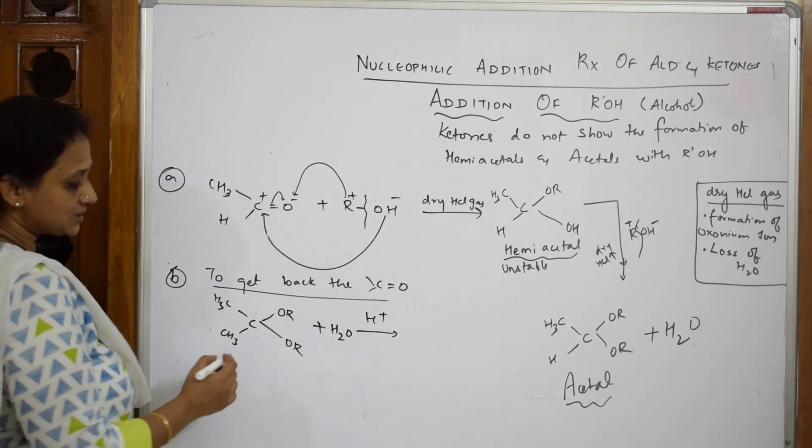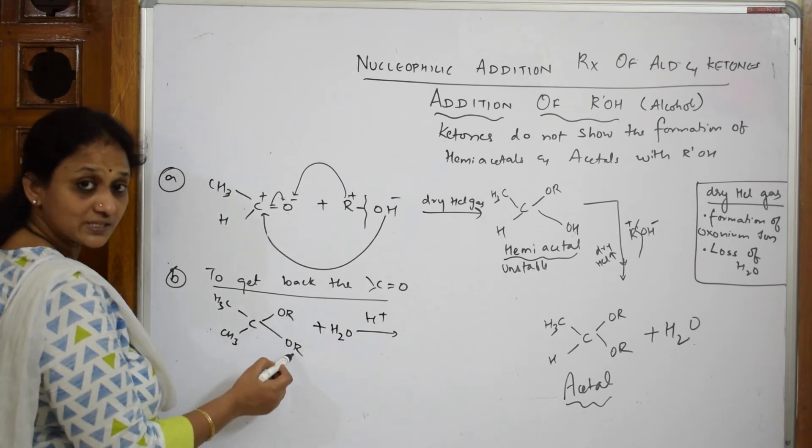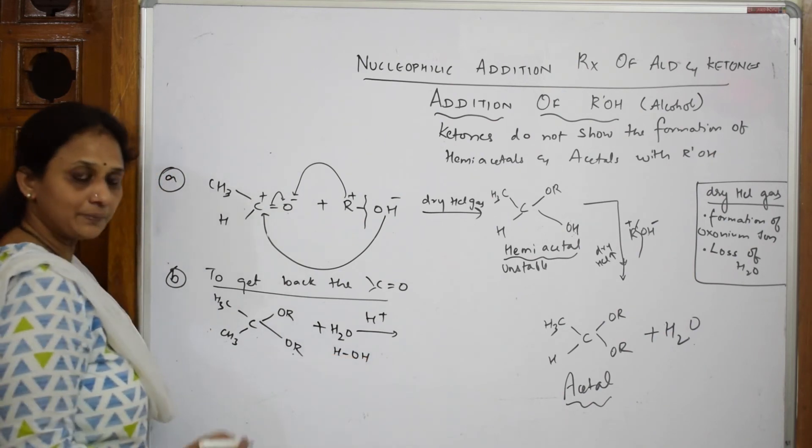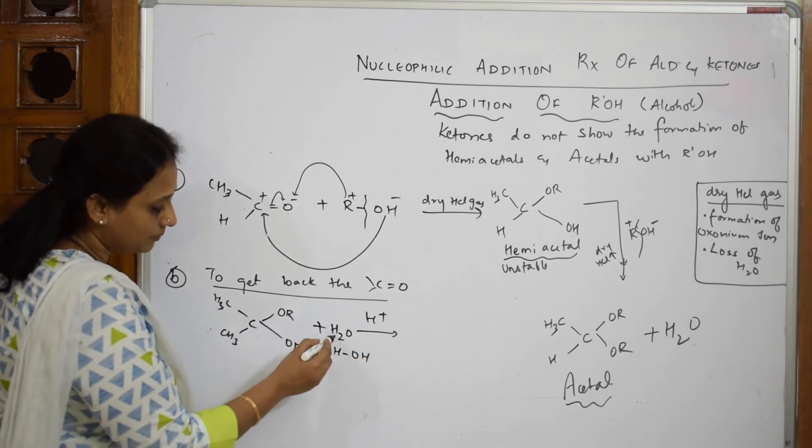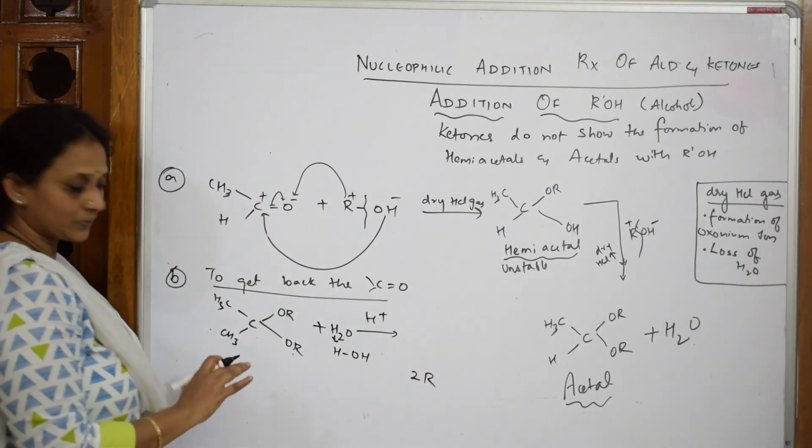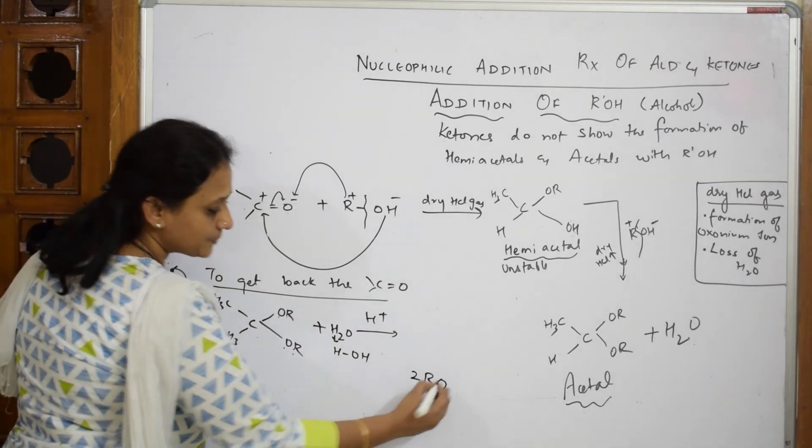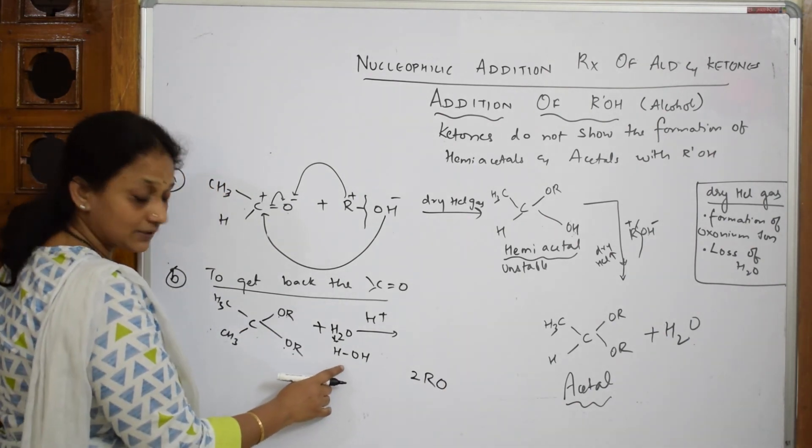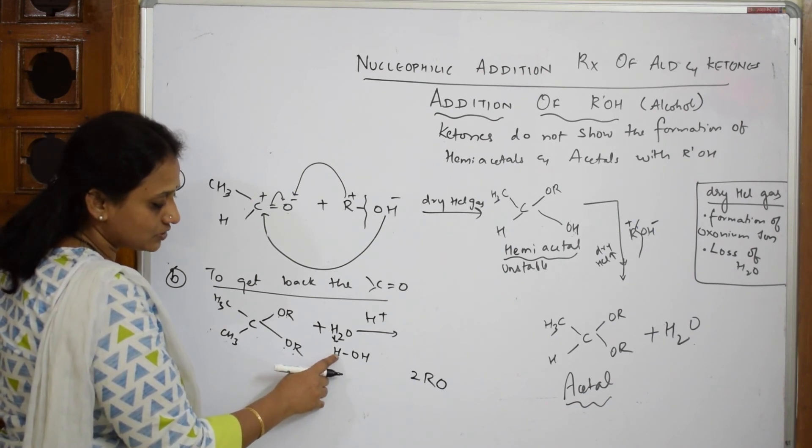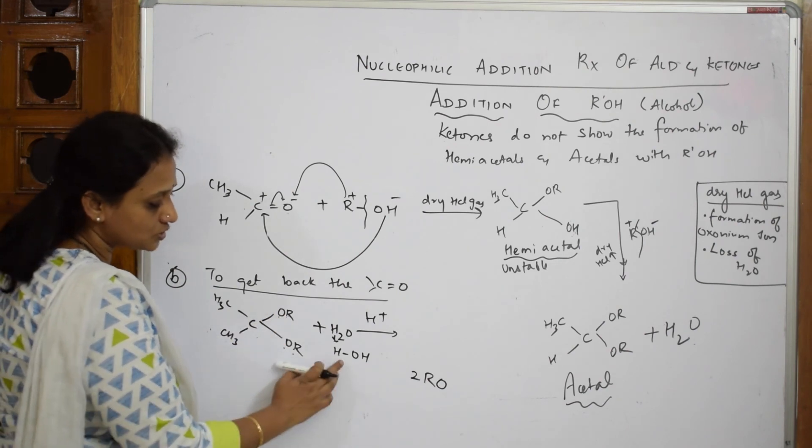Immediately what happens? Just observe carefully. Your R, how many R are there? One and two. I write H2O as H and OH. Simple. Your alkyl group, two alkyl groups, 2R will come out. Now your O and O also will come out along with this. What should I write? There is one hydrogen here, there is one hydrogen here. 2Rs, 2Os, 2 hydrogens.